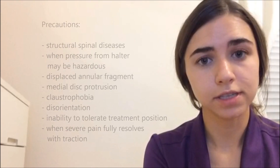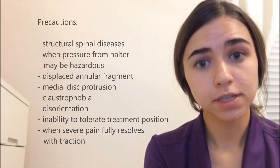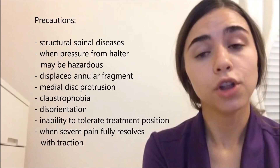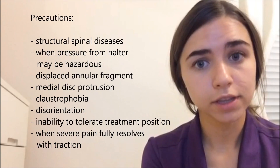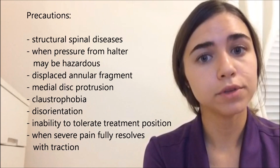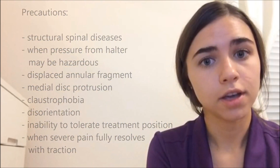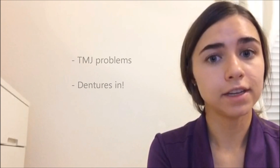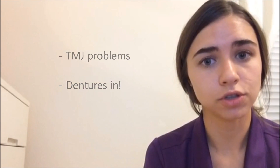There are also precautions to consider, which include structural spinal diseases, when pressure from the halter might be hazardous, a displaced annular fragment, medial disc protrusion, claustrophobia, disorientation, inability to tolerate the treatment position, or when severe pain fully resolves with traction, as that would indicate a complete nerve block. For cervical traction specifically, it's important to check for any history of TMJ problems, and for patients with dentures, they need to keep them in during treatment.